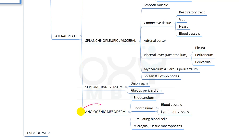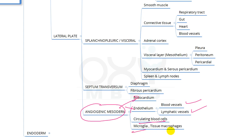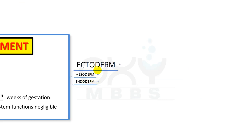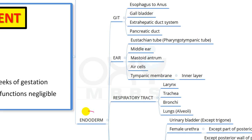From angiogenic mesoderm: endocardium, endothelium of blood vessels and lymphatic vessels, circulating blood cells, microglia, and tissue macrophages are derived. Now coming to structures derived from the endoderm.